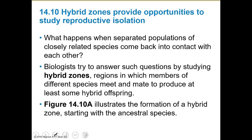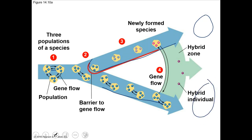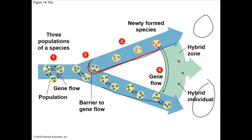What happens when separated populations that are related to each other come back into contact? We study this by looking at hybrid zones — areas in which members of different populations meet. Let's say we have these small populations moving back and forth, but then something happens: they move off to separate islands. Over time, maybe the water recedes a little bit and now there's a land connection between them. That area where the hybrid individuals would be is what we call a hybrid zone.